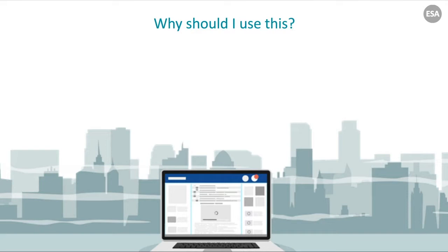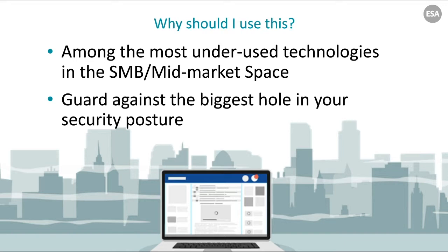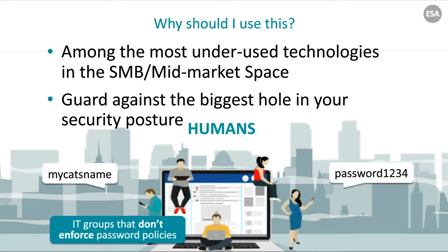Why should you be using this? Not enough people actually use it — it's among the most underused technologies in the small-to-medium business and mid-market space. Our research team continually tells us that implementing 2FA is the single easiest way to protect the human element: the worker who keeps using passwords like '1234,' their cat's name, or their birthday. IT departments don't rigorously enforce password policies enough.